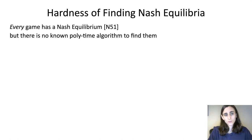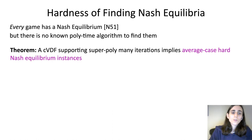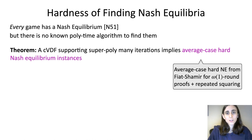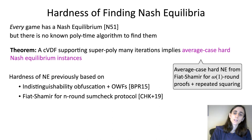So the celebrated result of Nash from 1951 is that every single game has a Nash equilibrium. However, there's no known polynomial time algorithm to find them in general. This motivated a line of work, in particular in cryptography, for basing the hardness of Nash equilibrium on cryptographic hardness assumptions, and we continue this line of work in this paper. We show that a continuous VDF which supports superpolynomially many iterations implies an average case hard Nash equilibrium instance. So if you instantiate this theorem with our main theorem, this gives average case hardness of Nash equilibrium from Fiat-Shamir for superconstant round proofs and also the repeated squaring assumption. Previously, this was known from strong assumptions like indistinguishability obfuscation and more recently from Fiat-Shamir for the n-round sum check protocol, which is somewhat incomparable to ours.